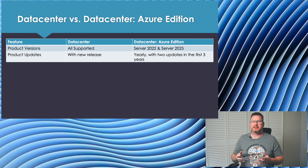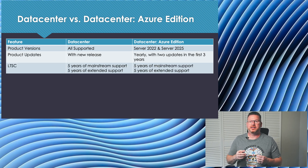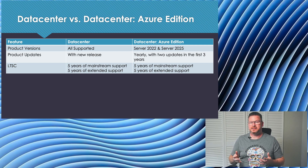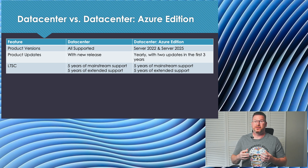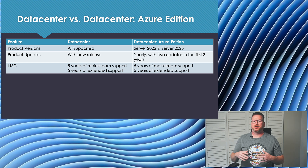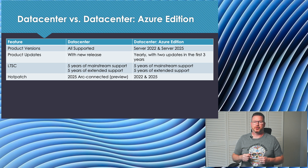It brings new functionality to Azure VMs yearly, rather than with new releases like Datacenter. Both Datacenter and Azure Edition are part of the long-term service channel, with five years of mainstream support and five years of extended support. Although the OS gets updated yearly, similar to the annual channel, Azure Edition remains in the long-term service channel. As we went over previously, Datacenter supports Hot Patch — the ability to patch servers without a reboot — available with Arc-enabled Server 2025 Standard and Datacenter only. The functionality is in preview at the time of recording.